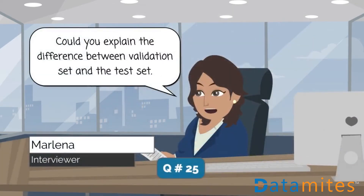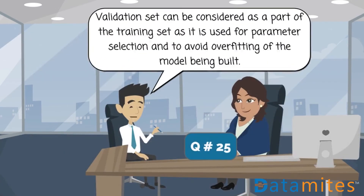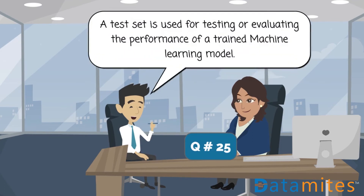Could you explain the difference between a validation set and a test set? A validation set can be considered as part of the training set, as it is used for parameter selection and to avoid overfitting of the model being built. A test set is used for testing or evaluating the performance of a trained machine learning model.